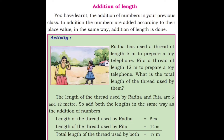In the same way, addition of length is done. Activity: Radha used a thread of length 5 meters to prepare a toy telephone. Rita used a thread of length 12 meters to prepare a toy telephone. What is the total length of the thread used by them? Length of thread used by Radha = 5 meters; length used by Rita = 12 meters. Total = 5 + 12 = 17 meters.